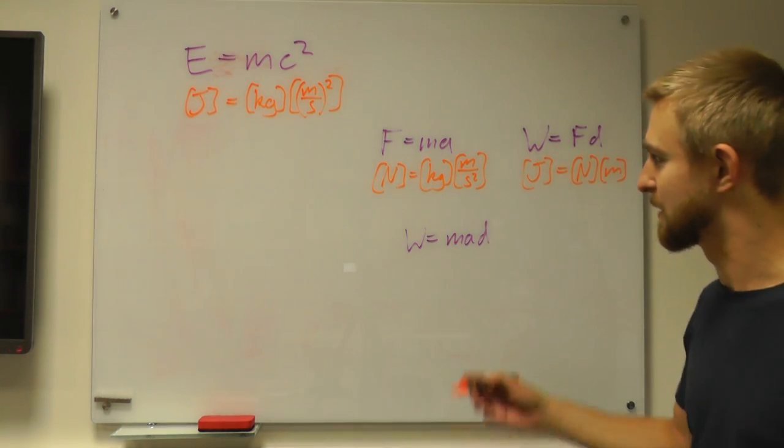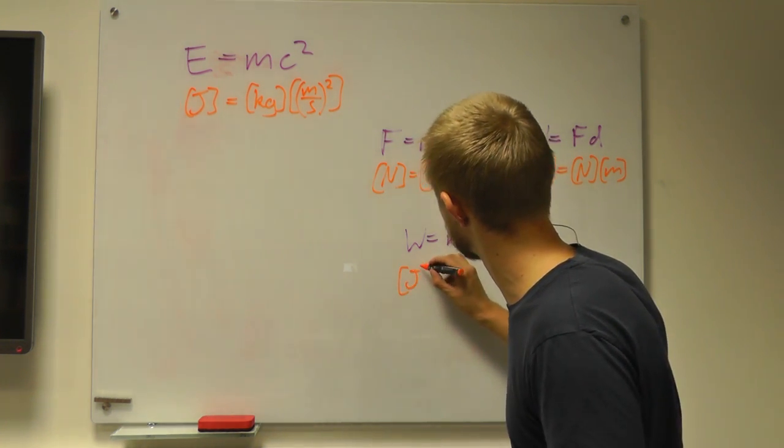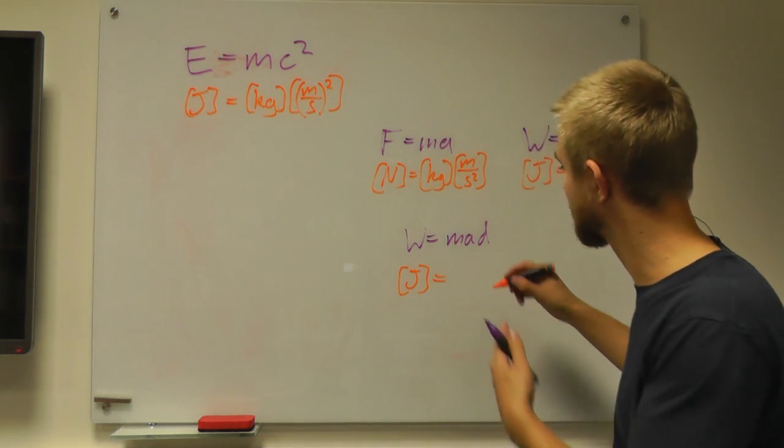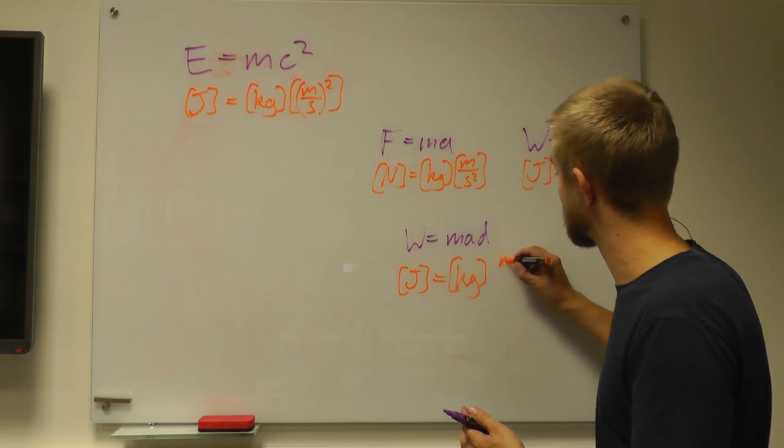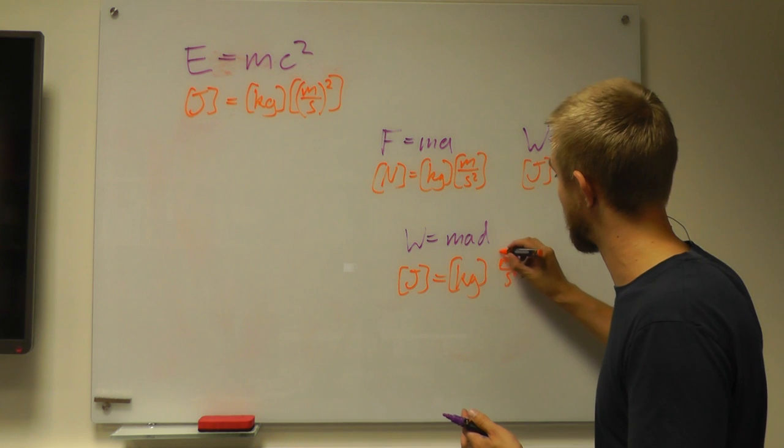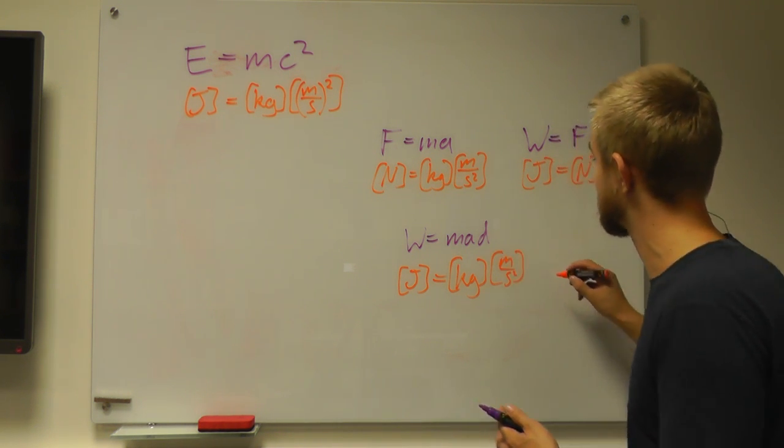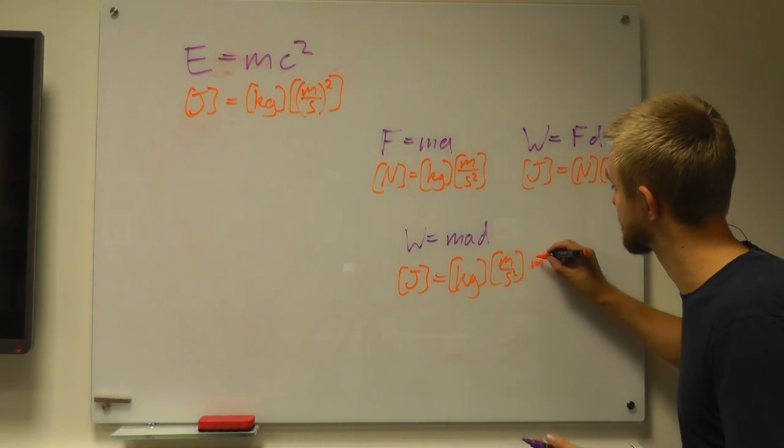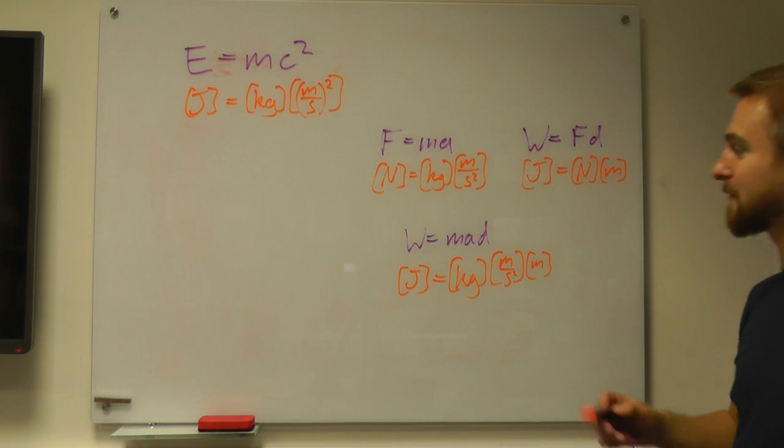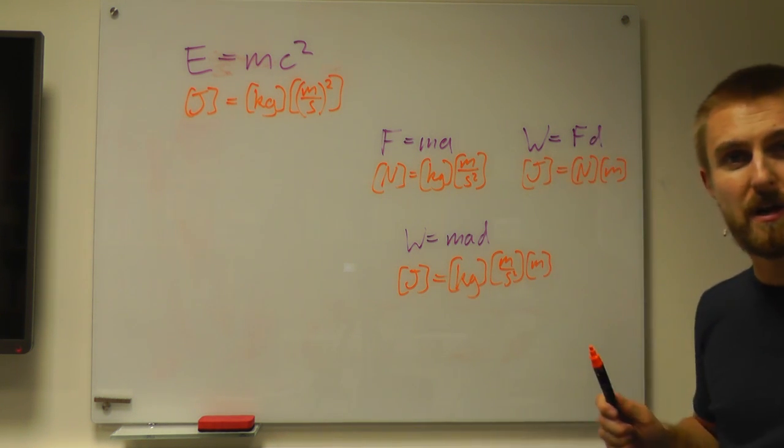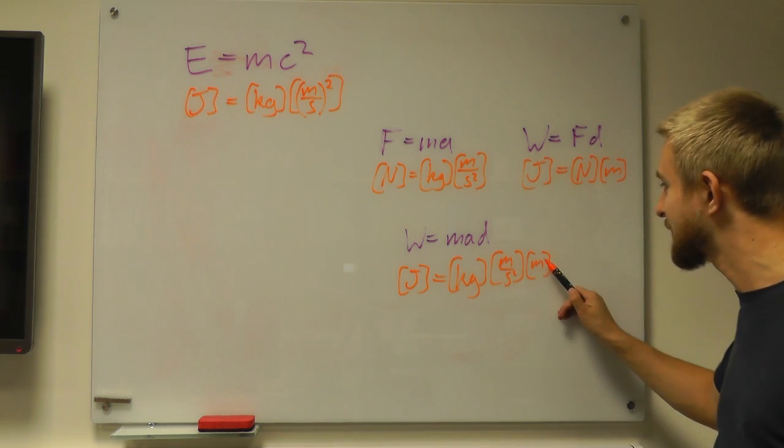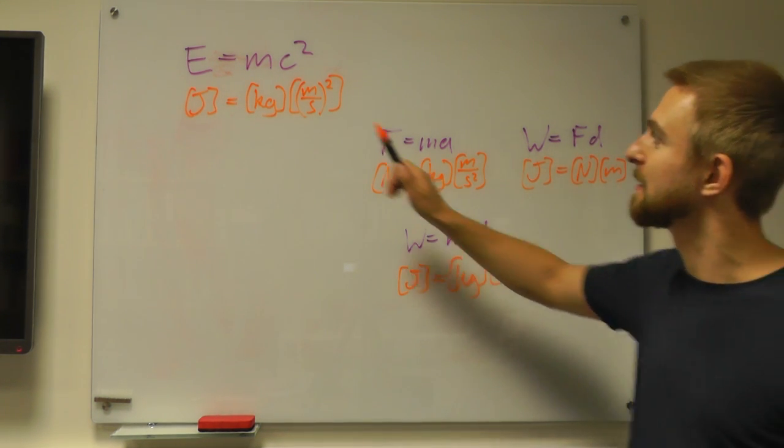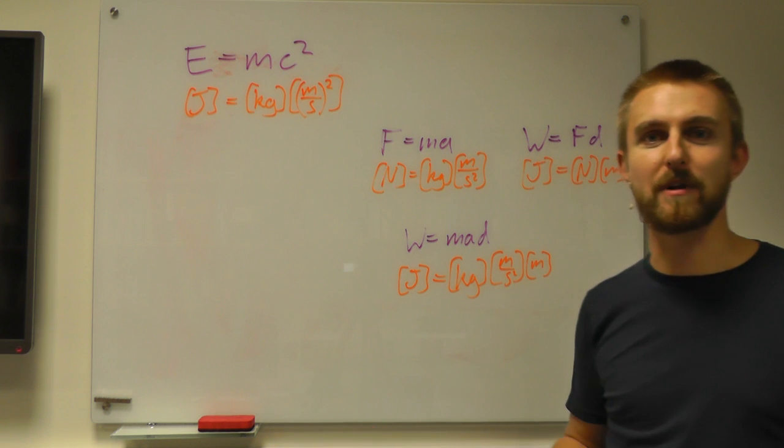Now let's look at the units. So work done is joules, equals mass kilograms, times acceleration meters per second squared, times distance which is just meters. So now we have an equation that says joules equals kilograms times meters squared per second squared, which is exactly the same as we've got written up here.